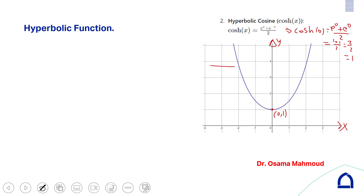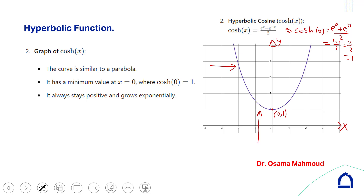The domain of cosh(x) is minus infinity to positive infinity. The range: the minimum value of y is 1 and the maximum is infinity. So the range is the closed interval [1, +∞) because the value at x = 0 is exactly 1.